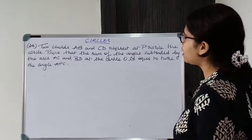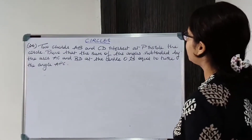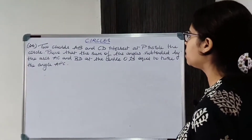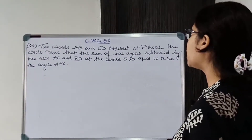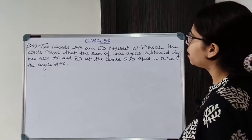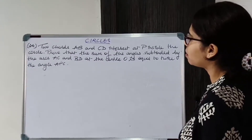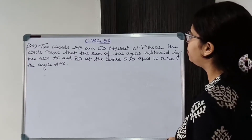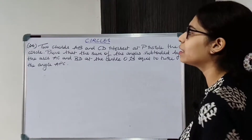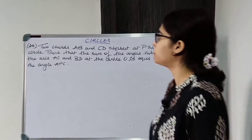Two chords AB and CD intersect at P inside the circle. Prove that the sum of the angles subtended by the arcs AC and BD at the center O is equal to twice the angle APC.